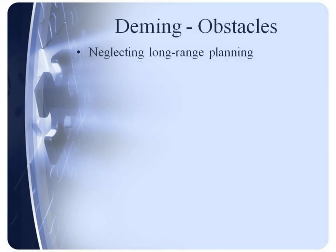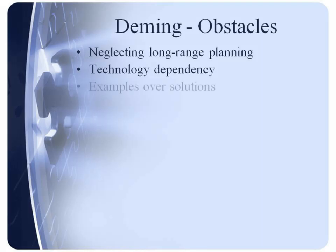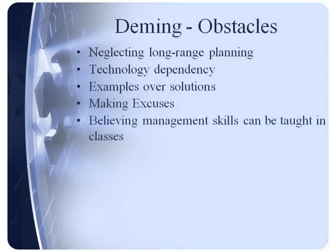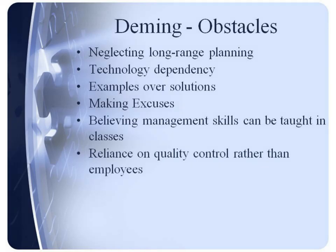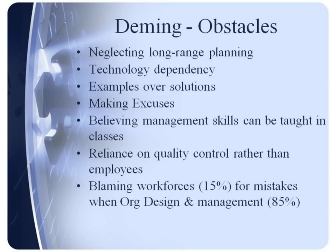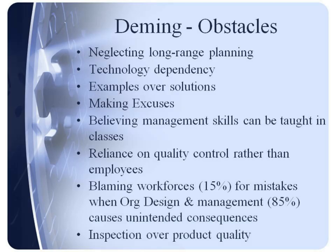Obstacles from Deming to organizational success and strategic management and strategic planning include: neglecting long-range planning, relying on technology to solve problems, seeking examples to follow rather than developing solutions, excuses that teams and individuals make such as 'our problems are different from theirs,' the obsolete belief that management skill can be taught in classes alone, reliance on quality control departments rather than on management, supervisors, managers of purchasing, and production workers to put quality in place from the very beginning, and placing blame on workforces who are only responsible for 15 percent of mistakes where the system designed by management is responsible for 85 percent of unintended consequences.